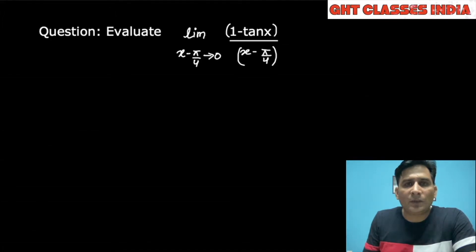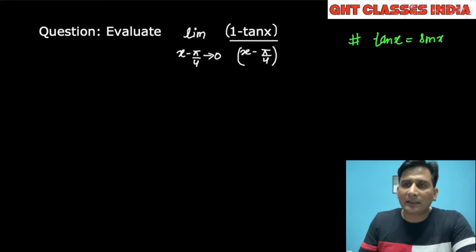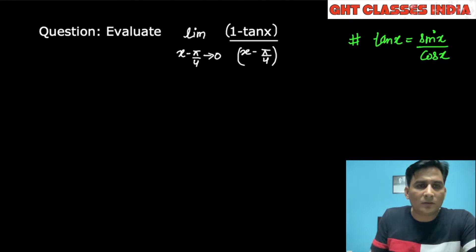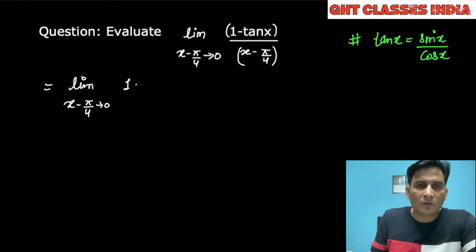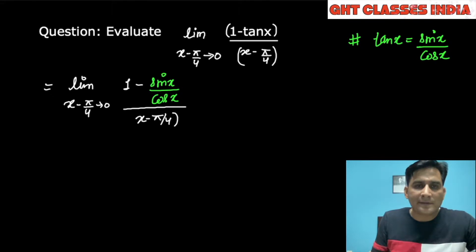Look at the question: evaluate the limit as x minus pi by 4 tends to 0 of 1 minus tan x upon x minus pi by 4. The first thing we need to apply is the formula for tan x. We know that tan x can be written as sine upon cos. Replace tan x in the question with sine by cos, so we have limit x minus pi by 4 tends to 0 of 1 minus sine x upon cos x, divided by x minus pi by 4.